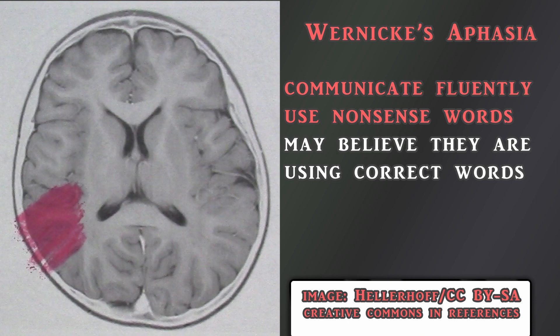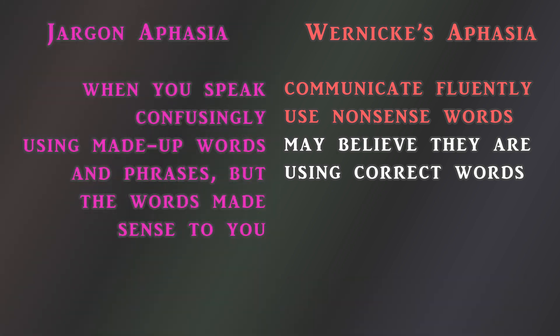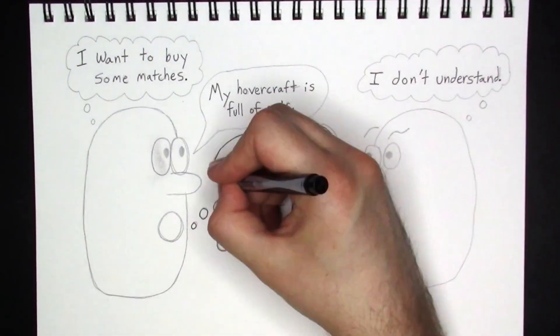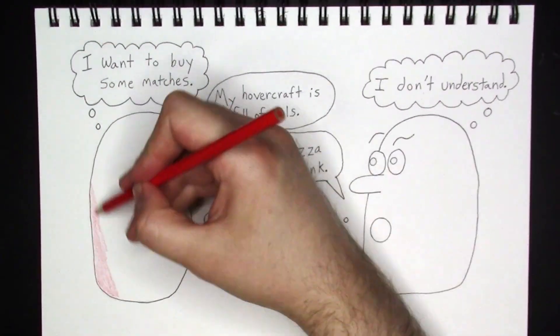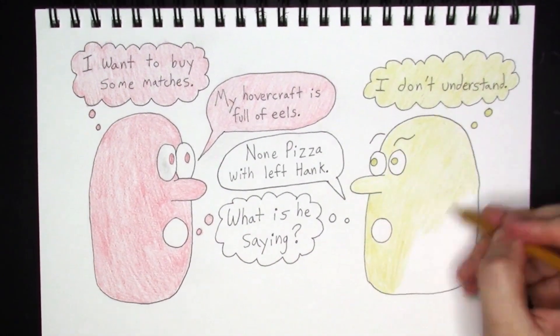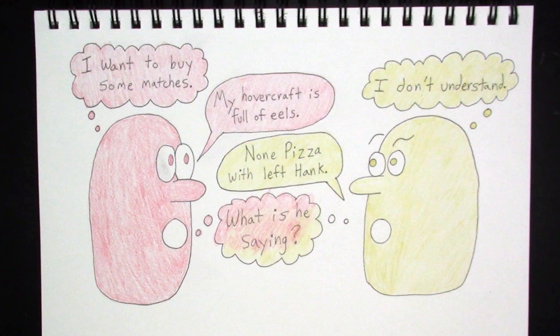This can lead to what is known as jargon aphasia, in which the afflicted person paraphrases with unusual word choices and may even invent words or phrases, resulting in long sentences that carry very little meaning for the listener. Additionally, those with Wernicke's aphasia generally cannot understand the meanings of words when they read or hear them. This can lead to frustrating situations in which they think they are communicating effectively, but aren't, and listeners may not be able to communicate that they don't understand.